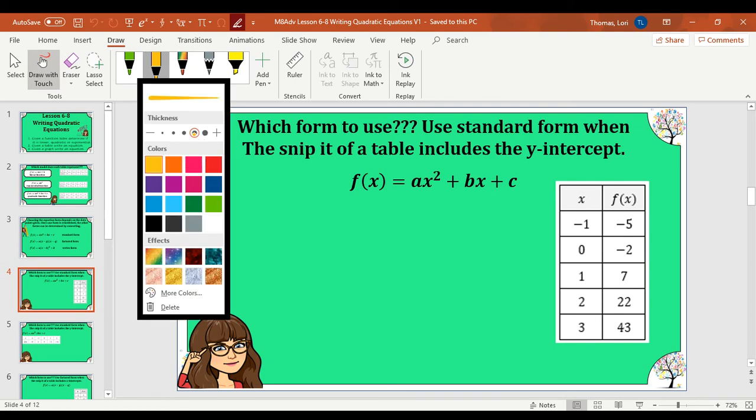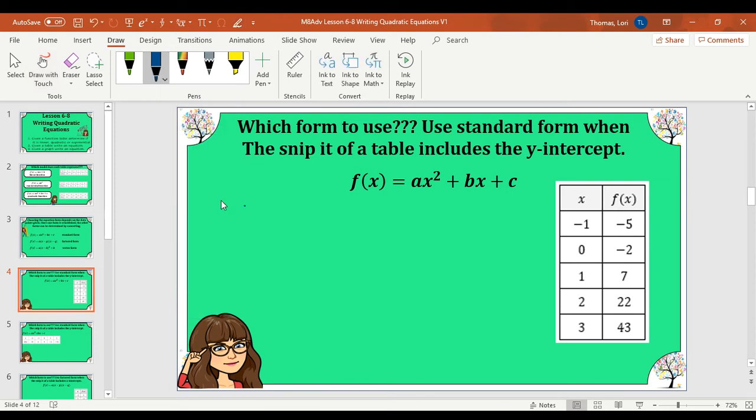So I'm going to switch over colors, go with blue. So what we need to do is go ahead and identify that our c value is going to be negative 2. So over here we're going to write all the stuff that we're given or that we can determine. So our c value is the y-intercept, so it's negative 2.